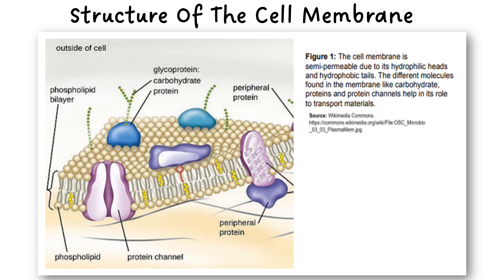How do these components help make the membrane selectively permeable? When we say selectively permeable or semi-permeable, it means the membrane is porous and able to transfer materials from the outside of the cell into the inside of the cell. Let's find out.